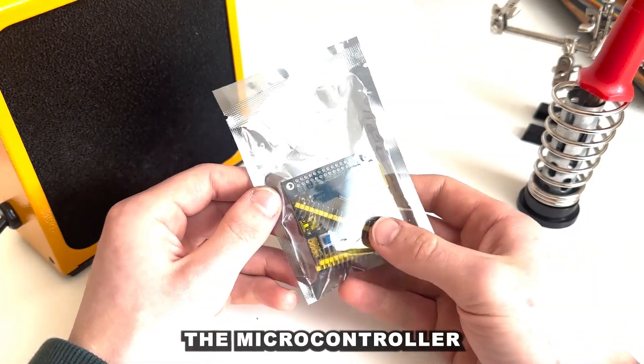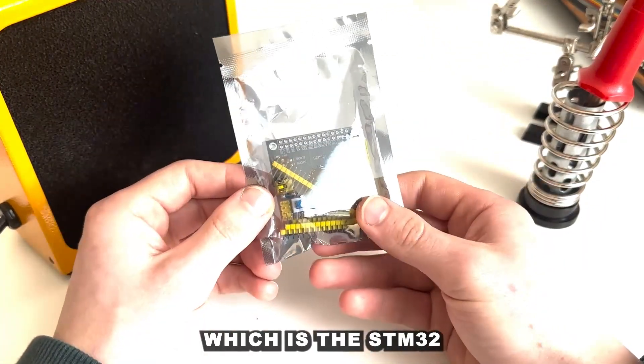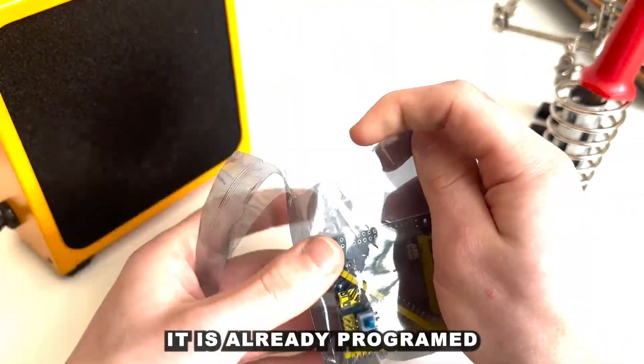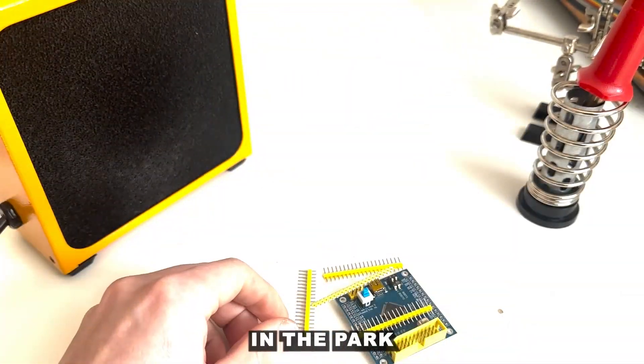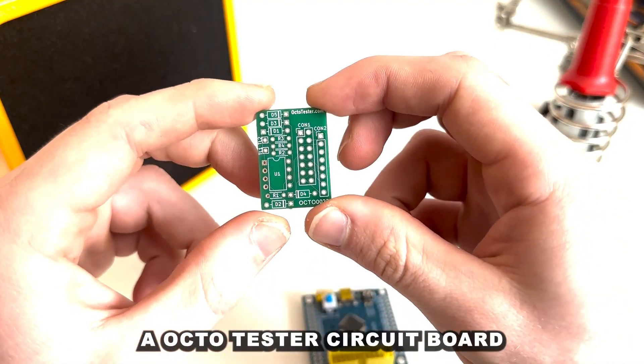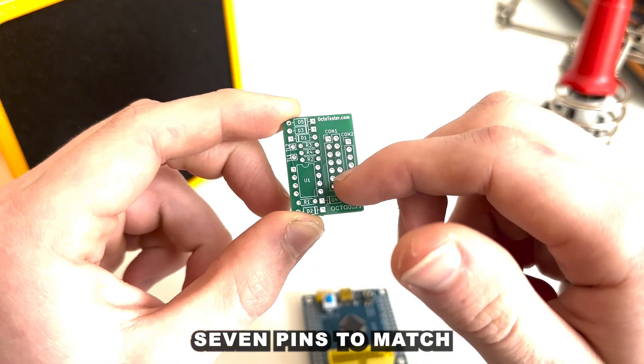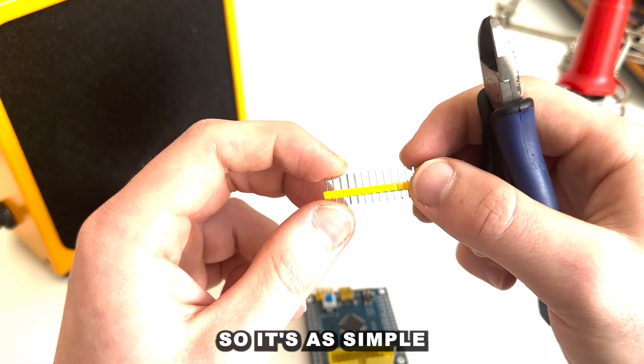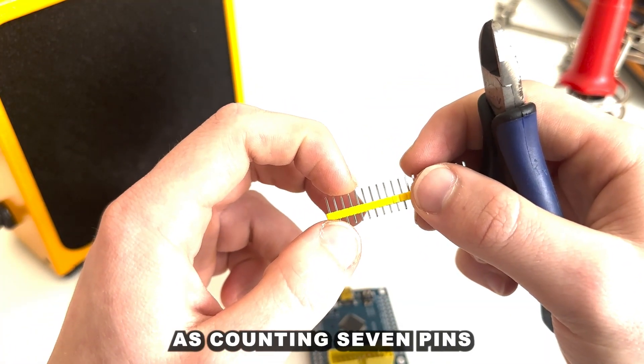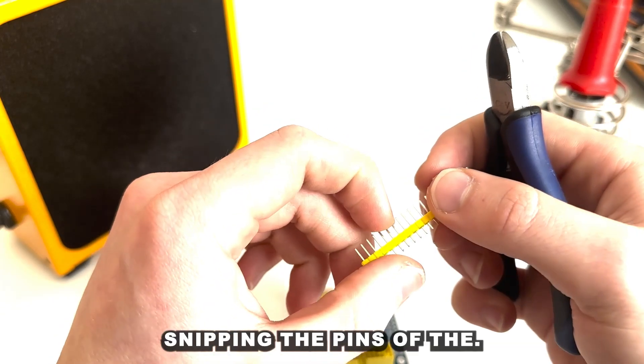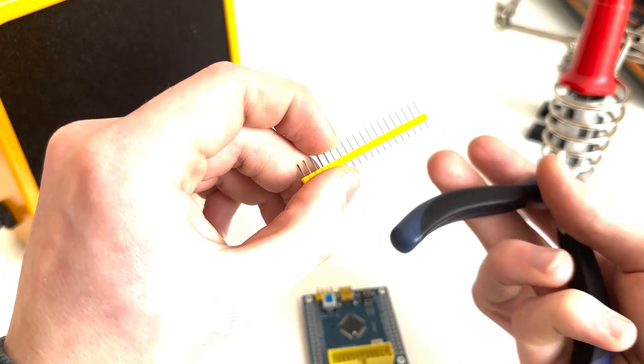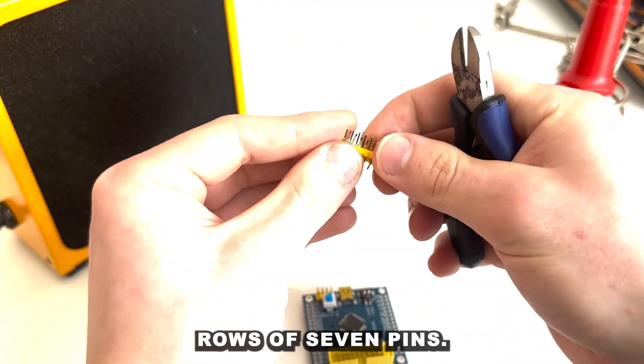Firstly grab the microcontroller which is the STM32. It is already programmed with the latest OctoTester release. In the pack you will also have an OctoTester circuit board and we need to cut out seven pins to match the connector. So it's as simple as counting seven pins and just snipping the pins off there. And we will need two rows of seven pins.